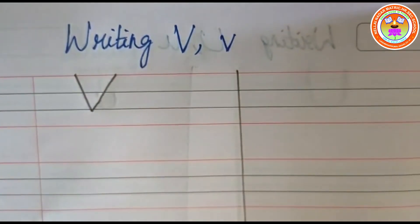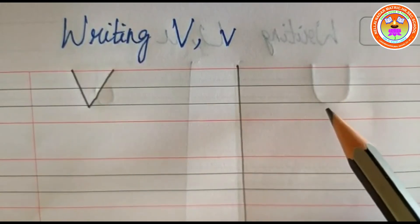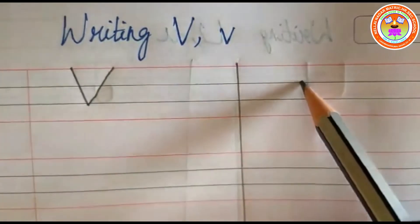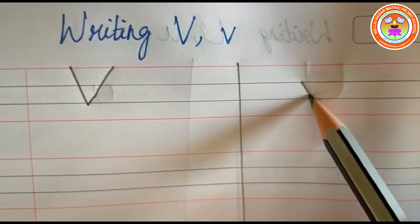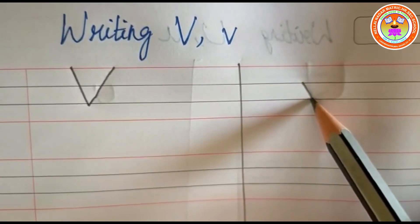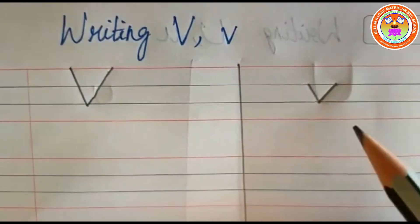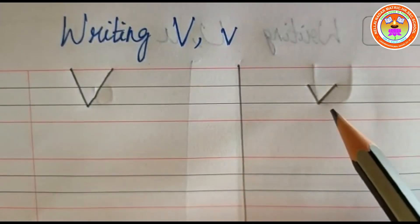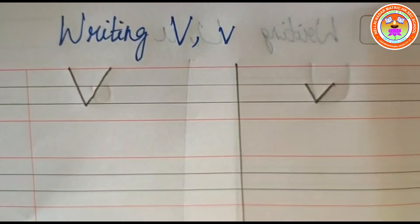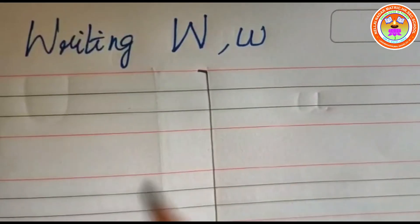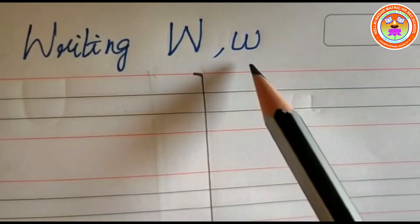For writing small letter V, you have to use these two blue lines. Touch on the first blue line and then put one slanting line like this. You have to come and stop it on the second blue line. Again from here another slanting line — you have to go up and touch on the first blue line like this. This is small letter V. Like this you also write in all the lines and complete it.